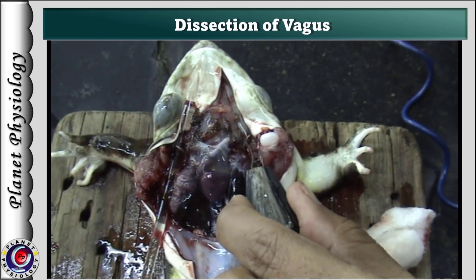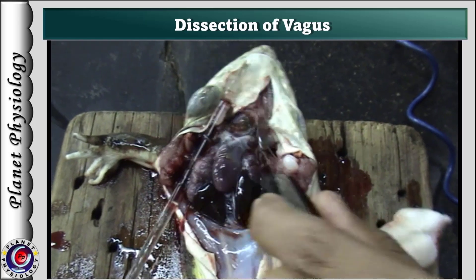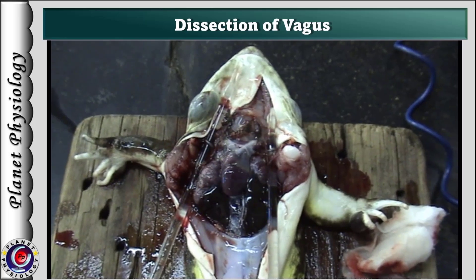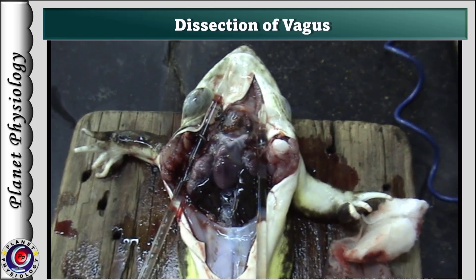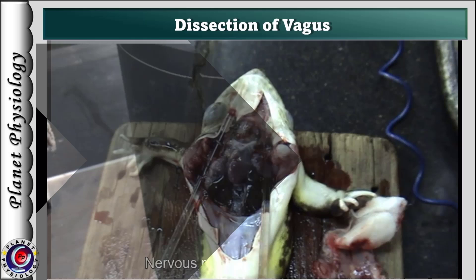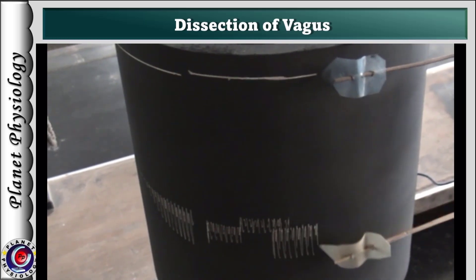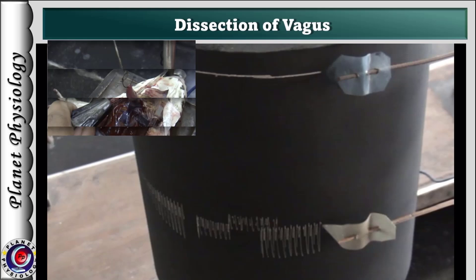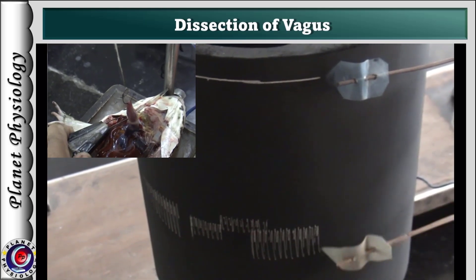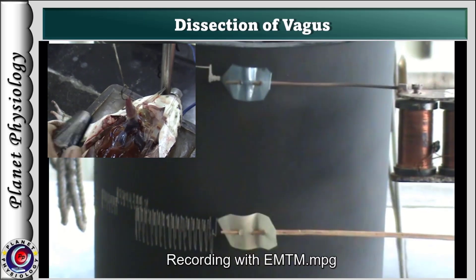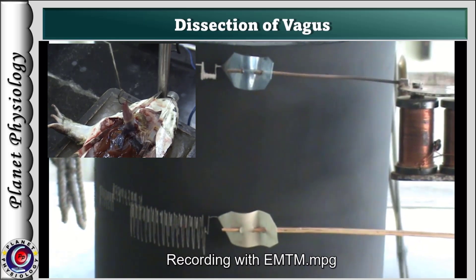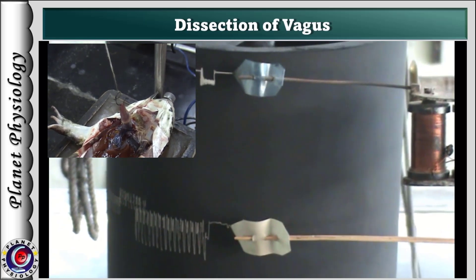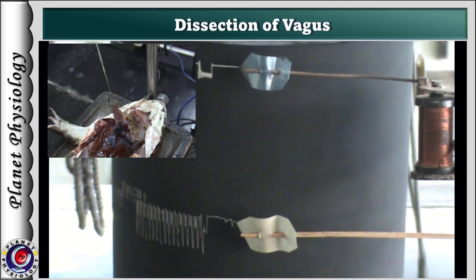After this confirmation, the preparation is mounted on the board, the heart is attached to the lever and its position is adjusted. A normal cardiogram is recorded on a slow moving drum. After recording the cardiogram for sufficient duration, the right vagus is stimulated, and stimulation is stopped immediately once the heart stops beating. This is confirmed by the straight line on the cardiogram.